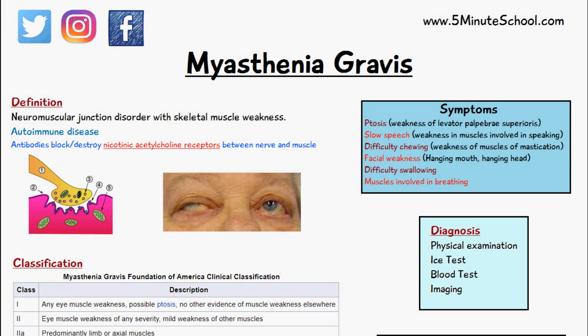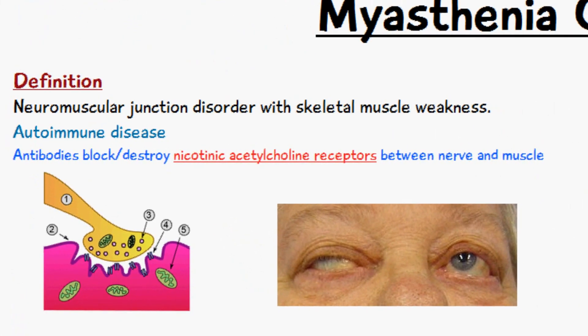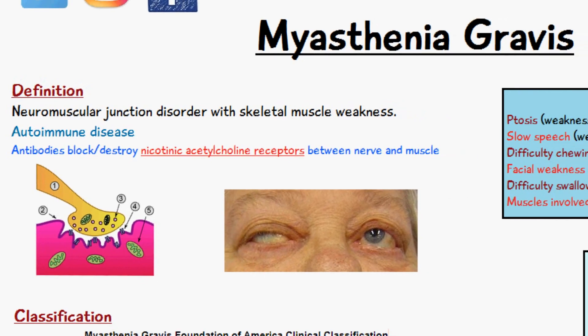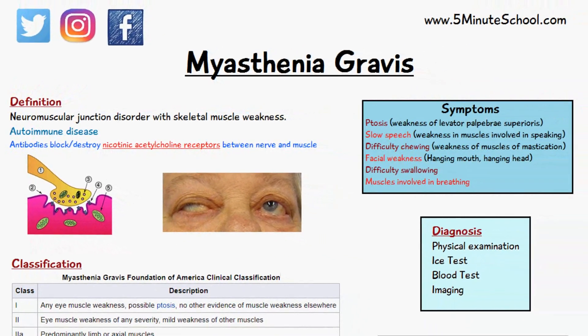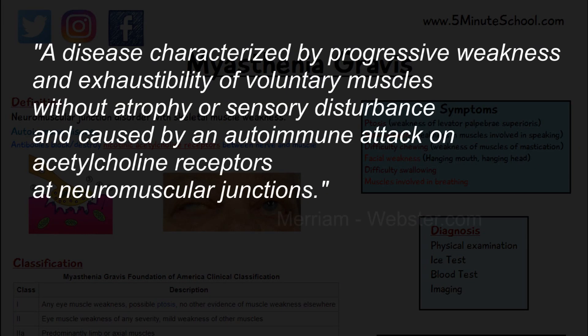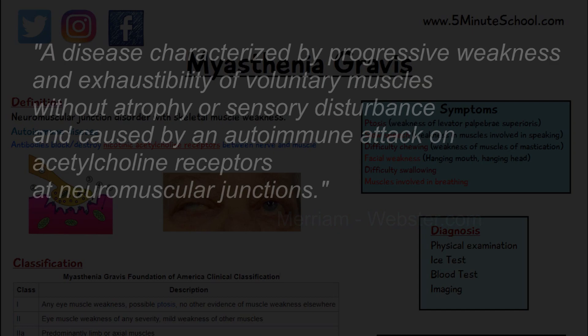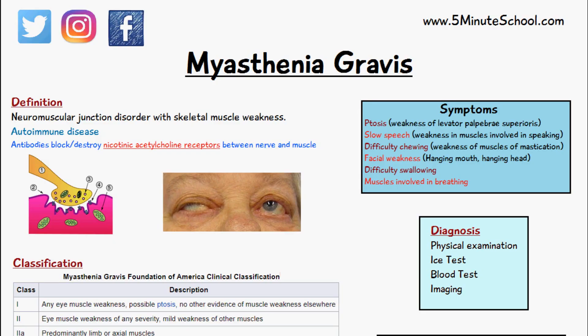In today's video we're going to be talking about myasthenia gravis, which is a neuromuscular junction disorder and the effects of it lead to skeletal muscle weakness. The medical definition is a disease characterized by progressive weakness and exhaustibility of voluntary muscles without atrophy or sensory disturbance, caused by an autoimmune attack on acetylcholine receptors at neuromuscular junctions. Myasthenia gravis affects about 200 people per million — it's basically the body attacking its own receptor cells in the neuromuscular junction.